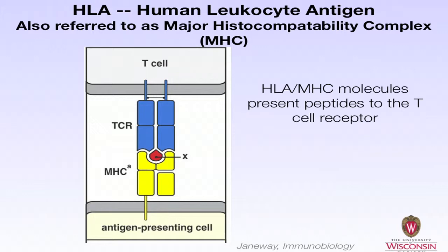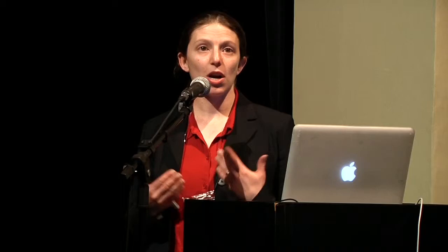The genomic organization of the HLA is located on chromosome 6. Each person has two copies of the HLA A, B, and C genes — you inherit one copy from your mom and one from your dad — giving each person a total of six HLA alleles. In addition to having multiple different HLA genes, those genes are highly polymorphic. As of just earlier this month, the IMGT HLA database reported 1,757 class I A alleles, 2,338 class I B alleles, and 1,304 class I C alleles, making it very difficult to find multiple people with identical HLA genes.